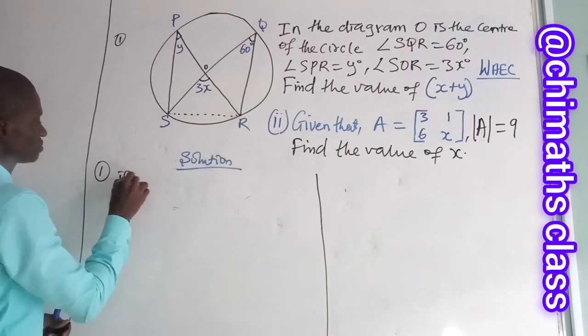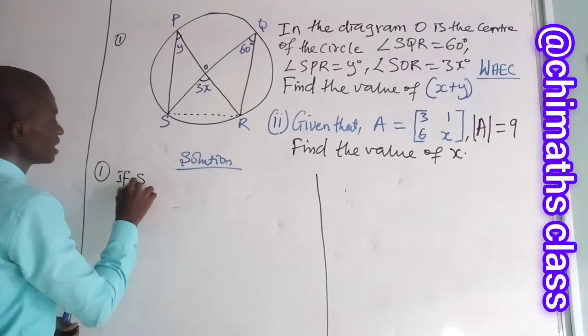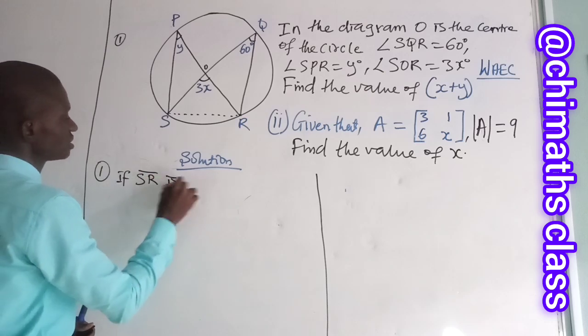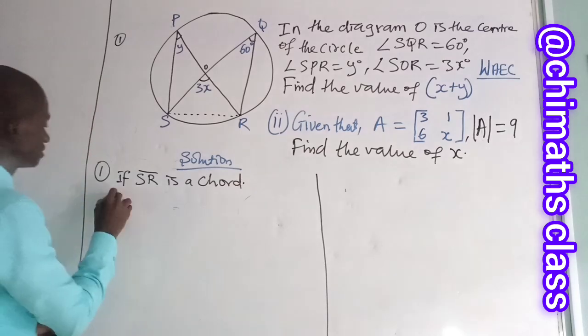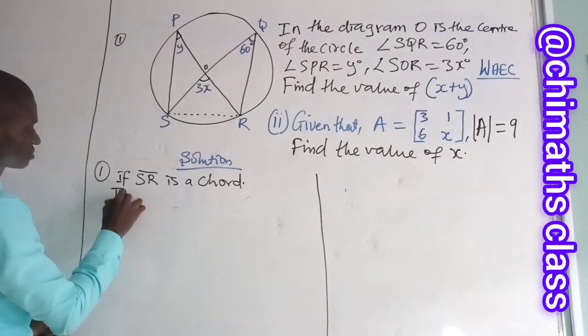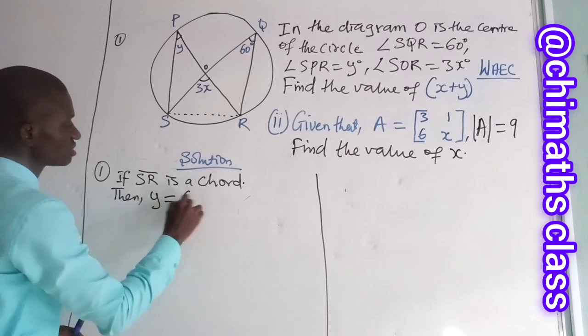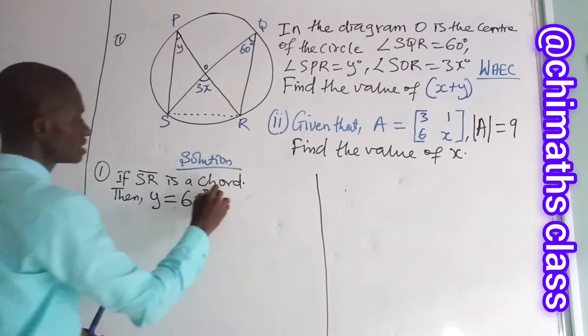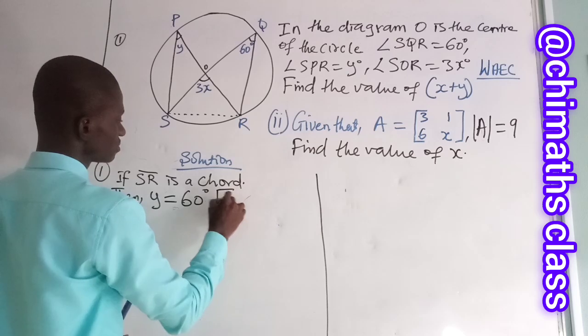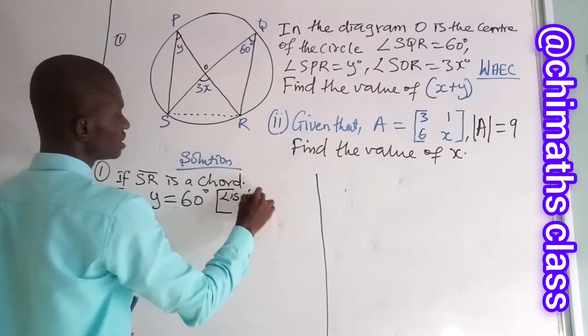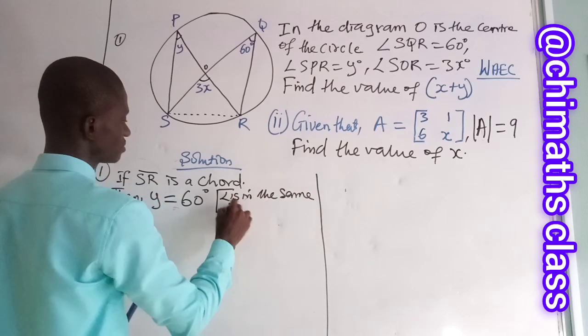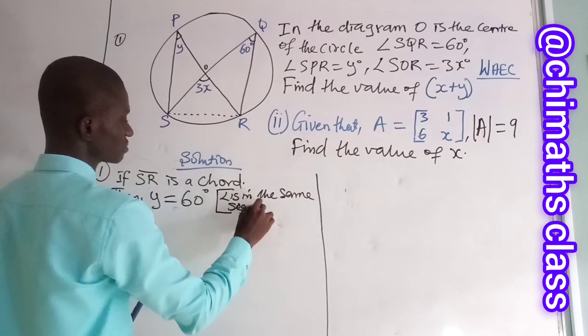So, if SR is a chord, then why is it possible to 60 degrees? Origin is angles. Angles in the same segments.